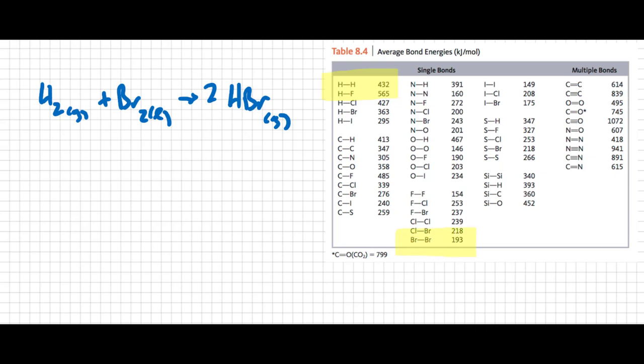Remember, to break bonds, you have to put energy in. I'm going to take 432 kilojoules per mole of hydrogen, and there's only one mole of hydrogen here.